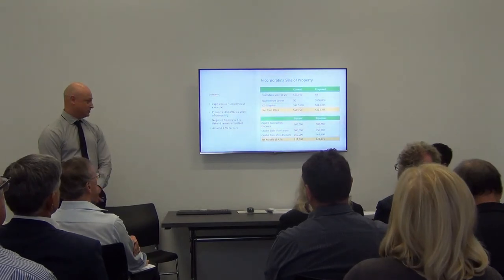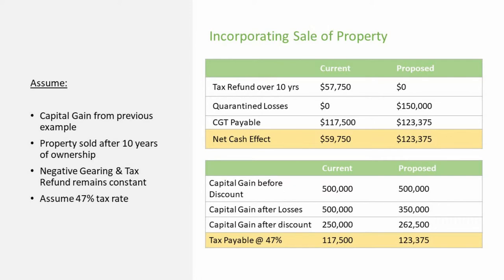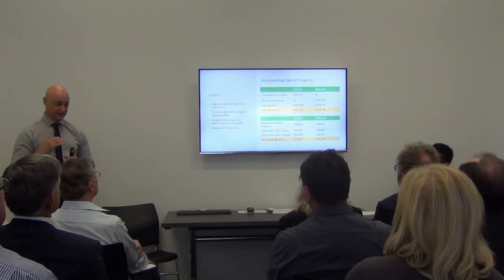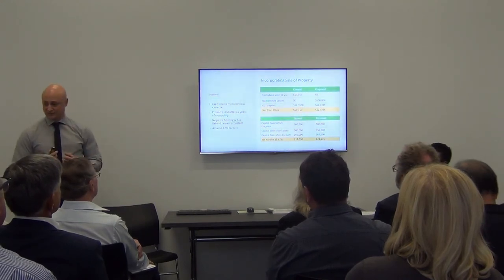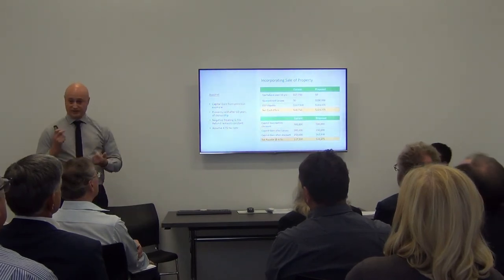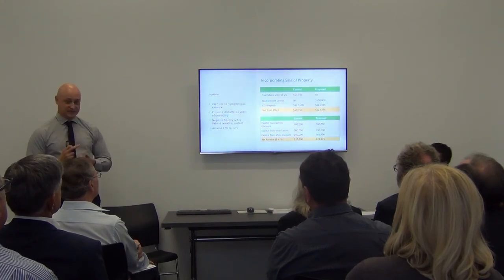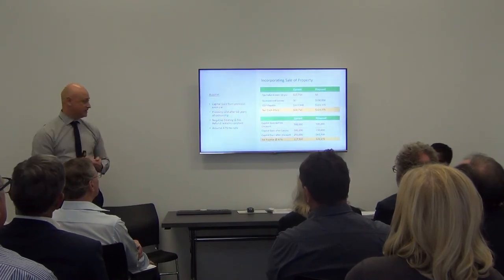If you factor in the sale of the property and combine both elements together, we achieve the capital gain from the previous example — a $500,000 capital gain — selling the property after 10 years of ownership. The negative gearing tax refund amount remains constant: a regular refund of $5,700 per year for 10 years. The negative gearing loss is $15,000 constant for 10 years, assuming a 47% tax rate. Under the current rules, the tax refund over 10 years is $57,000, and capital gains tax payable is $117,000, so the net cash paid to the ATO is $59,000.